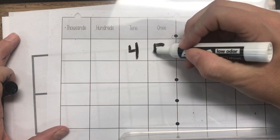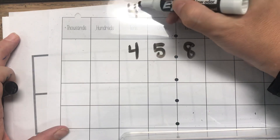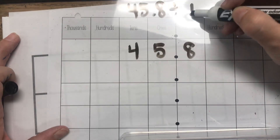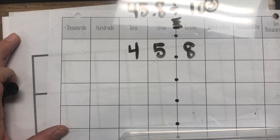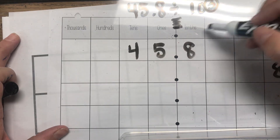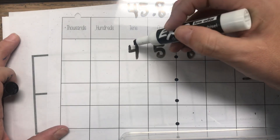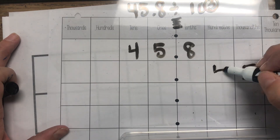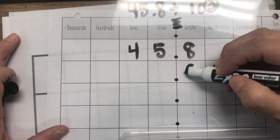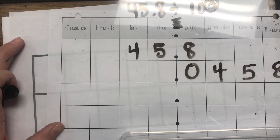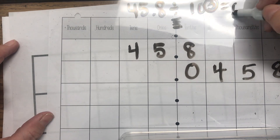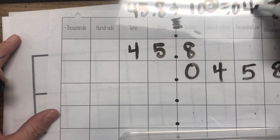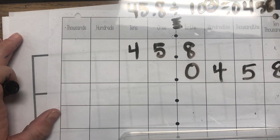Let's do 45.8 and divide it by ten to the third. We're going to make it smaller by three shifts. I shift the eight once, twice, three times; my five once, twice, three times; and my four once, twice, three times. I fill in the placeholders. So 45.8 divided by ten to the third is four hundred fifty-eight ten-thousandths, or 0.0458.